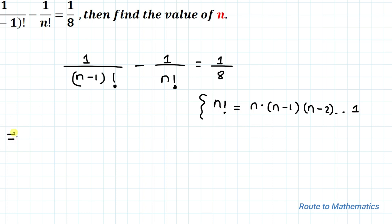So now, in the next step we will write 1 by (n-1)! minus 1 by, we can write n! as n multiplied with (n-1)! equals to 1 by 8.